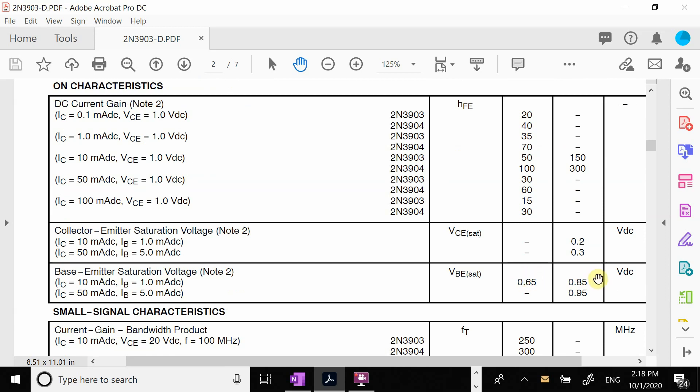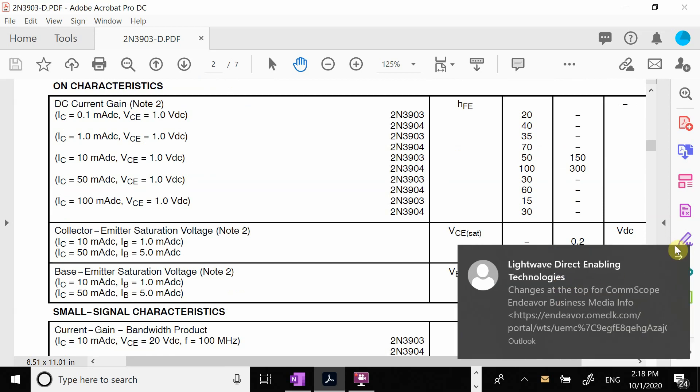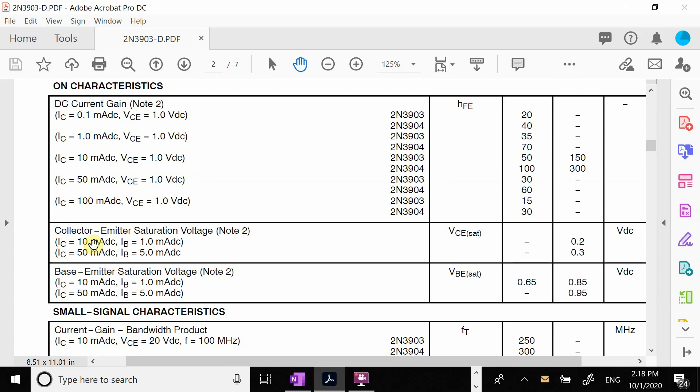So it's going to range anywhere from 0.65 to 0.85. That's why we've been using 0.7 volts. Now the collector emitter when it goes into saturation you see they use about 0.2 volts. So it isn't 0.7, it's about 0.2.